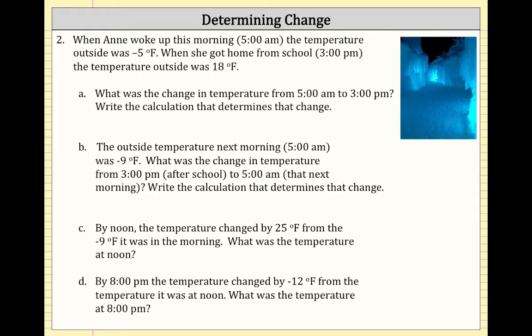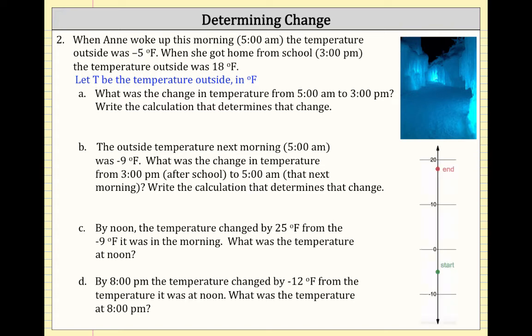Let's look at another example. When Ann woke up at 5 a.m., the temperature outside was negative 5 degrees Fahrenheit. When she got home from school at 3 p.m., it was 18 degrees Fahrenheit. Let T be the temperature outside in degrees Fahrenheit. We'll use a vertical number line, with points plotted at the starting temperature of negative 5 degrees and the ending temperature of 18 degrees.